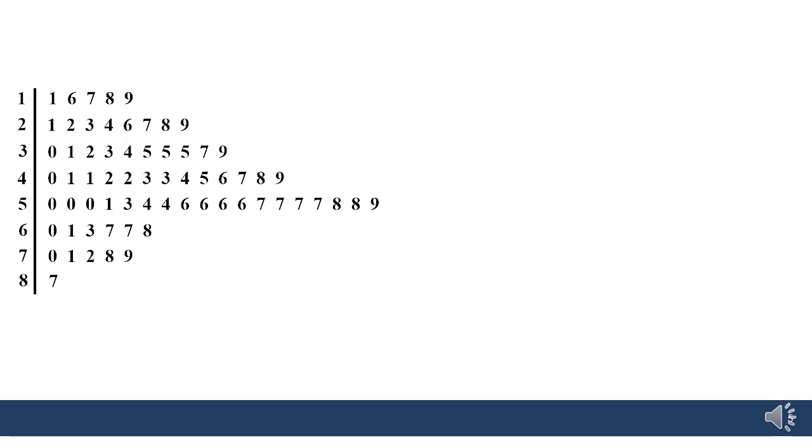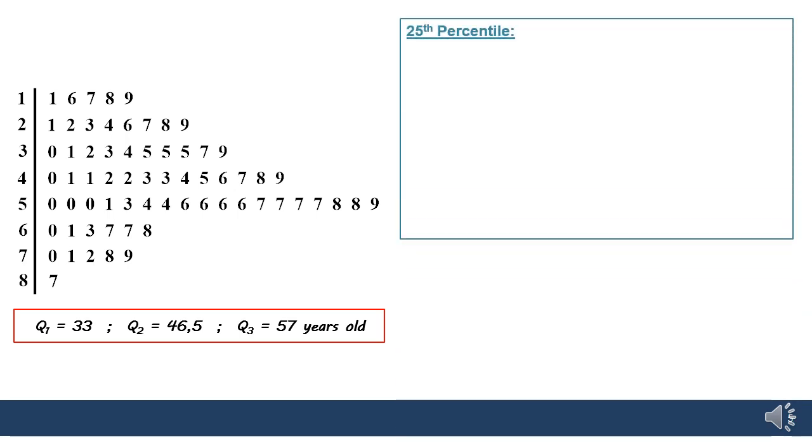We're going to use that stem and leaf plot. I'll put up the quartiles for reference. We want the 25th percentile, which is the same as quartile 1. Just like with quartiles, I'm going to figure out the position of the 25th percentile. In percentiles, we use this thing called an index, which is just another word for position. Your book shortens that to i.